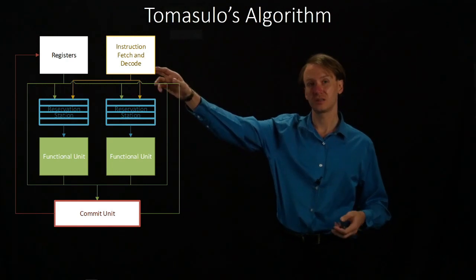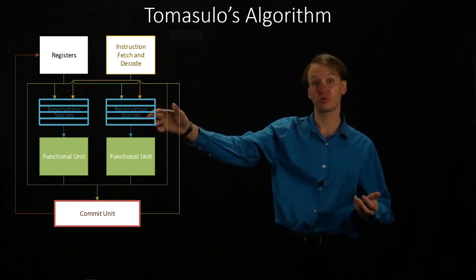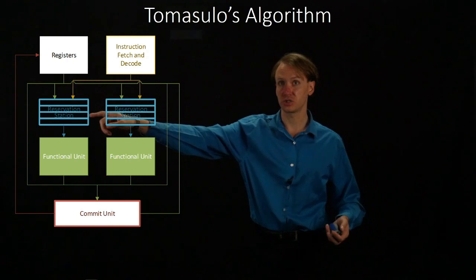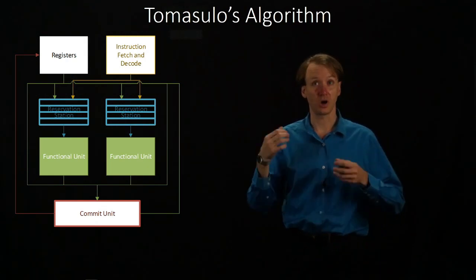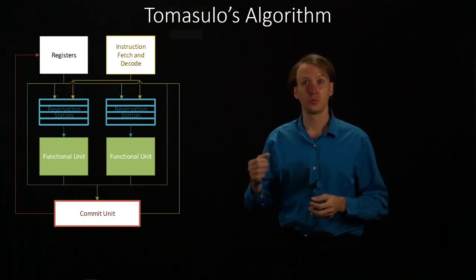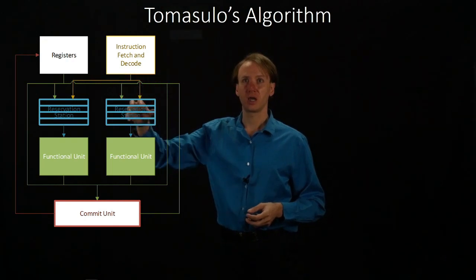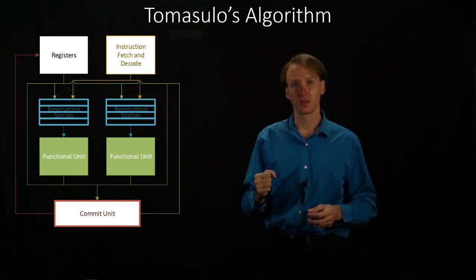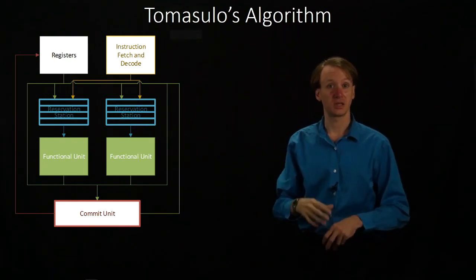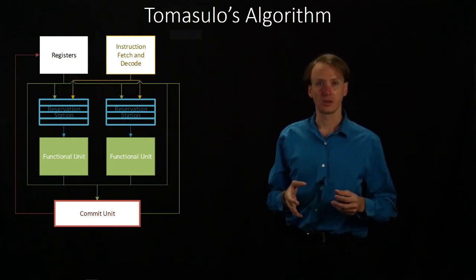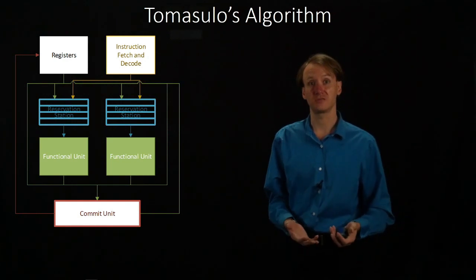When an instruction comes in that doesn't already have all of its parameters, it's going to reach a reservation station and write down where that parameter is going to come from — which reservation station holds the instruction that will compute the data it needs. When that instruction finally moves through the pipeline and comes out the other end, it will send that data back around the bus, and each of the reservation stations will have a chance to grab that data. If the new instruction needs that data, it grabs it off the bus and marks that it's got it. If that's all the data needed, it's ready to run. If not, it'll wait until it sees the other piece of data it needs.